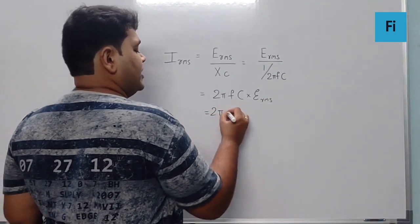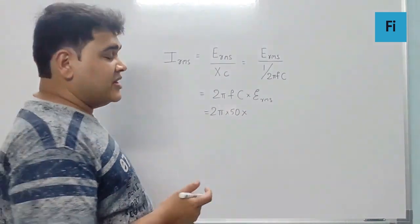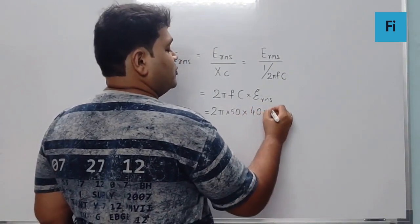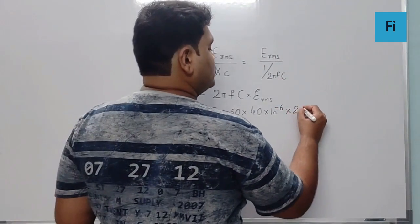So 2 pi into F is given as 50. And the capacitor is given as 40 microfarad, so 40 into 10 raise to minus 6. And the ERMS is given as 200.